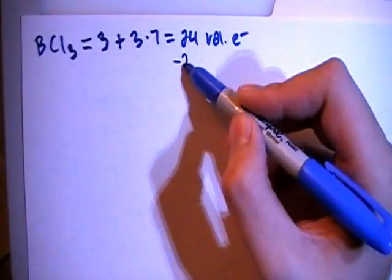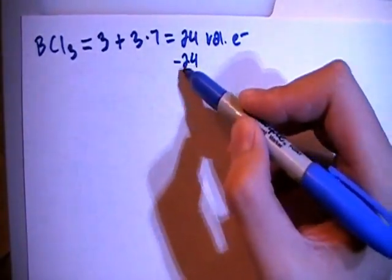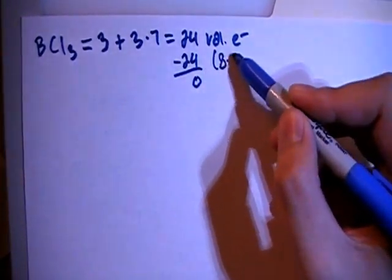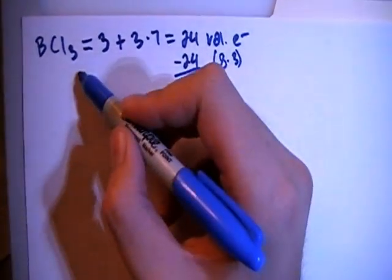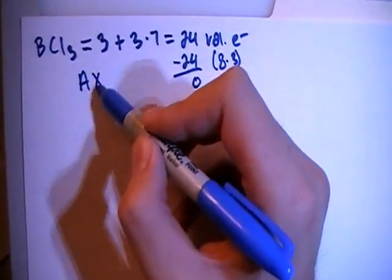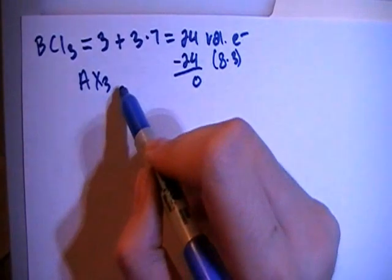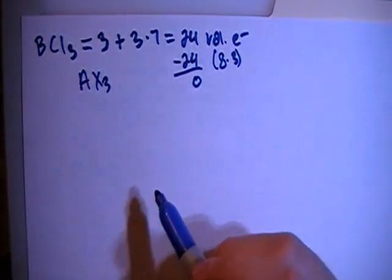And we can subtract out the large multiple of 8, which in this case is also 24, giving us a remainder of 0, and that being 8 times 3, meaning that you're going to have an essential atom, AX3, A being the central atom, and 3 surrounding atoms with no non-bonding electron pairs.